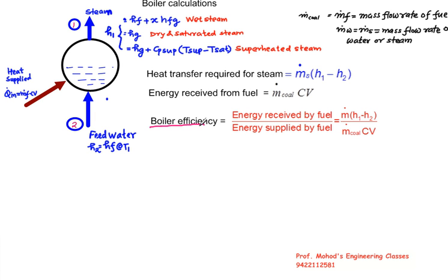So we can define boiler efficiency as energy received by fuel upon energy supplied by fuel. Boiler efficiency is mass of M dot, that is the mass of the steam, multiplied by H1 minus H2 upon mass of coal multiplied by calorific value.